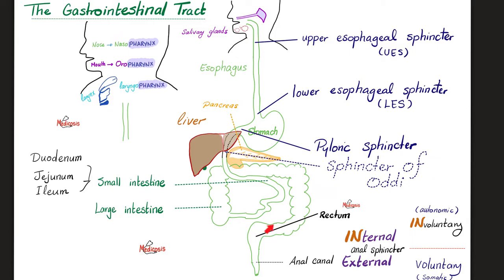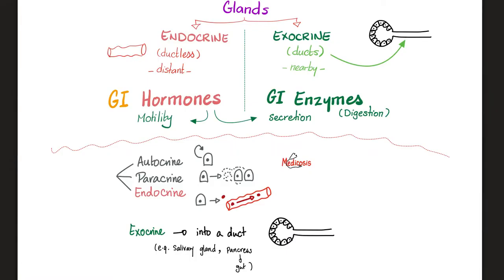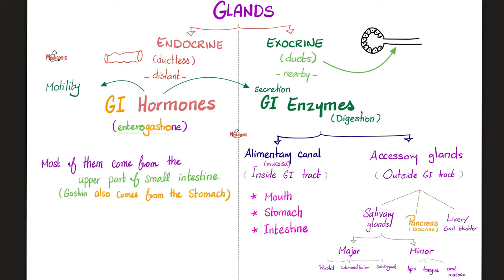In order to digest and absorb, you need motility and secretion — secretion of gastrointestinal enzymes and hormones. Enzymes are released from exocrine glands that have ducts into nearby structures, but endocrine hormones are released from ductless glands into distant locations via the bloodstream. VIP is an endocrine hormone. Most gastrointestinal hormones are released by the upper part of the small intestine and sometimes by the stomach.